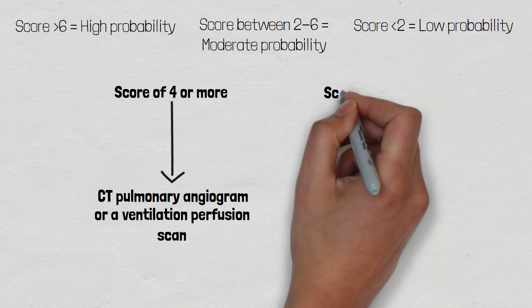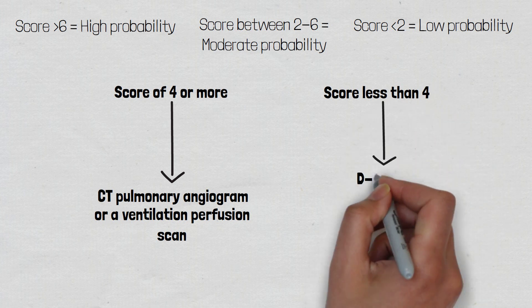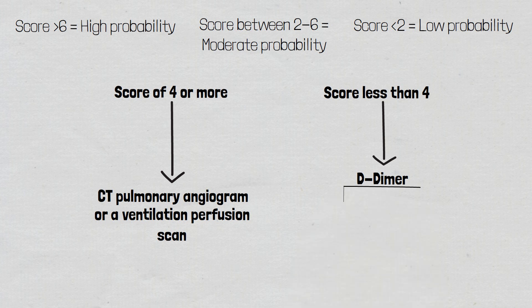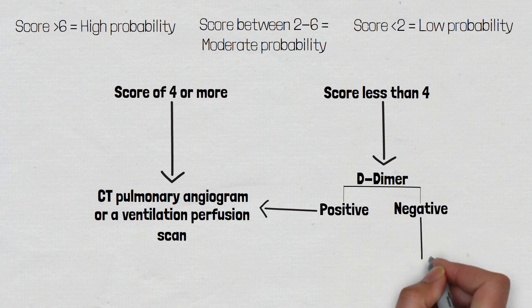If the patient scores less than 4 then they require a D-dimer. It is important to identify what unit of measurement the lab is using and what those specific ranges are. Typically the cutoff point for D-dimer units is 250 ng per milliliter, and for fibrinogen equivalent units the cutoff is 500 ng per milliliter — anything above these values is a positive test. If the D-dimer is positive, the patient requires imaging via CT pulmonary angiogram or ventilation perfusion scan. If the D-dimer is negative, it's unlikely the patient is suffering from a pulmonary embolism.